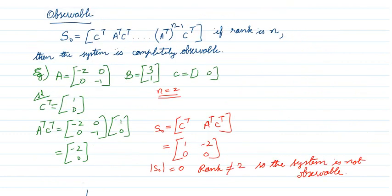Next we move into observability. For observability, the matrix S₀ is formed as [Cᵀ | AᵀCᵀ | (Aᵀ)²Cᵀ | ... | (Aᵀ)^(N-1)Cᵀ]. If the rank of S₀ is equal to N, then the system is completely observable.